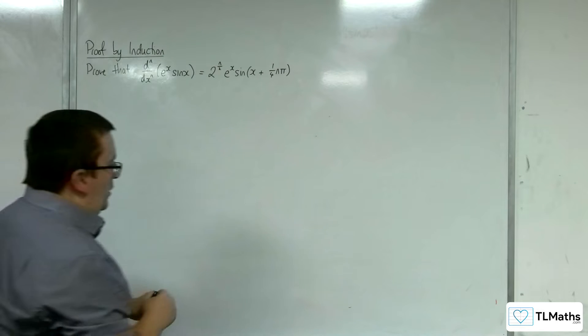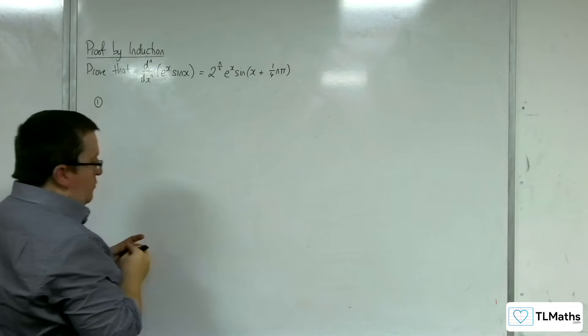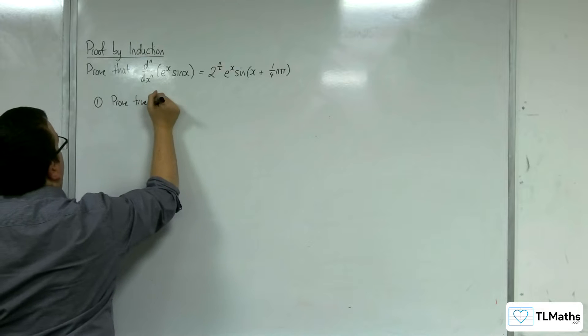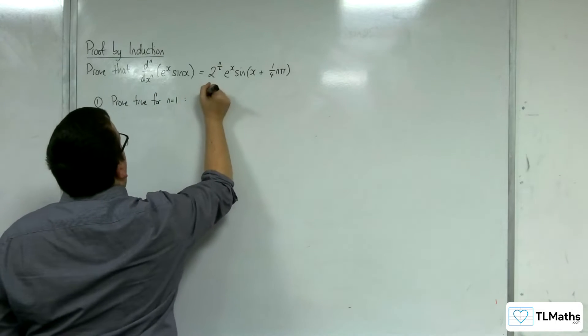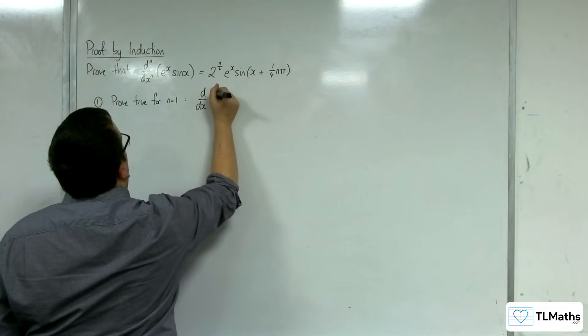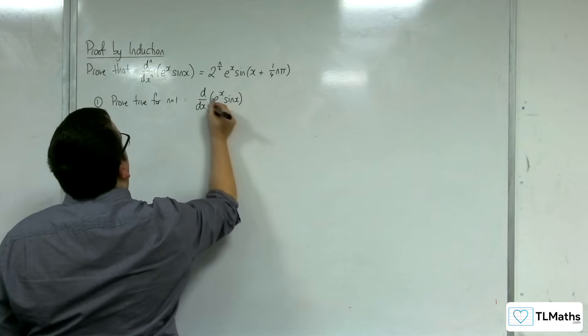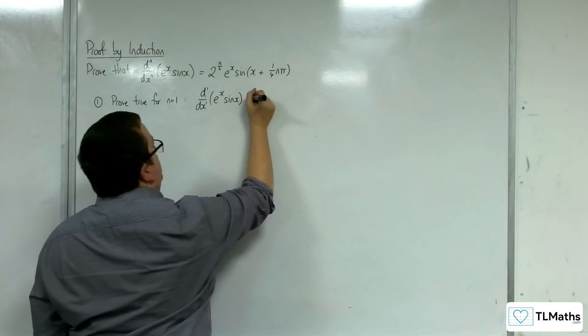So step one then. We prove true for n equals 1. So we need to differentiate with respect to x e to the x sine x. So we'd use the product rule to do that.